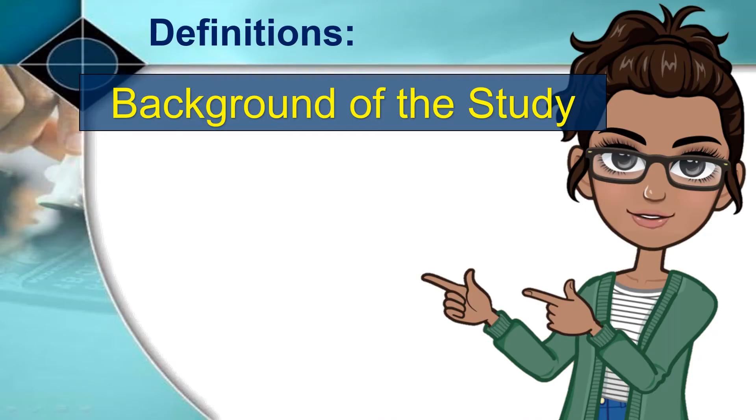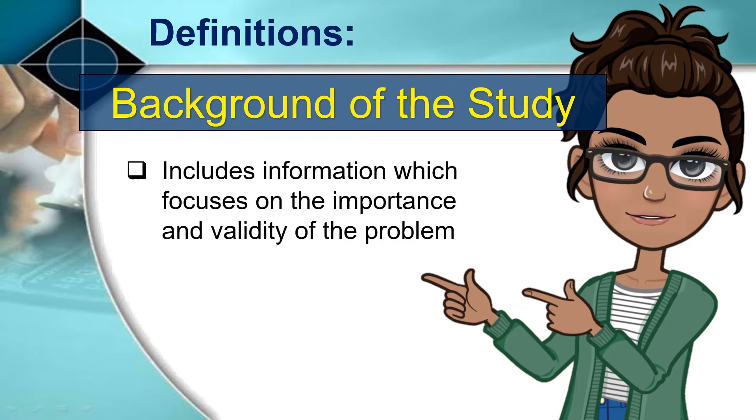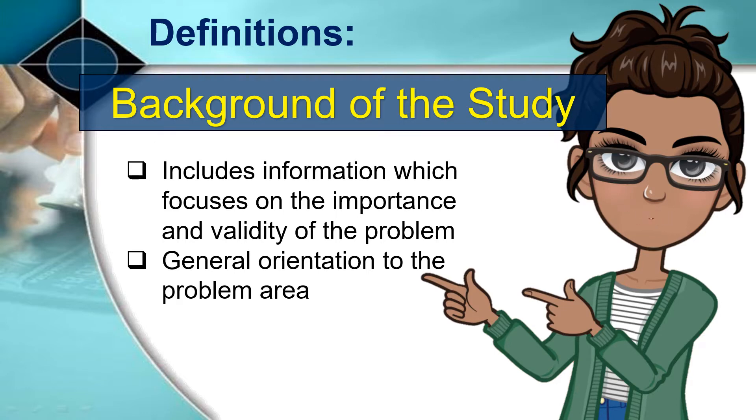Background of the study: this part of research includes information which would focus attention on the importance and validity of the problem. It is the general orientation to the problem area. A brief rationale to justify the problem must be provided.